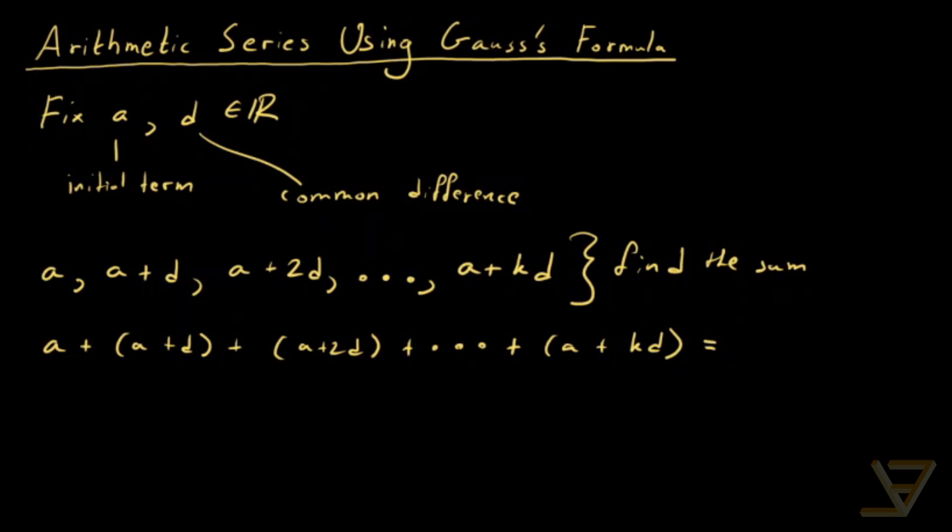And we want to find a formula for this. Let's say F of A, D, and K. K is 1 less than the number of terms. That is a closed formula.